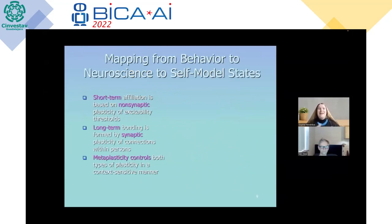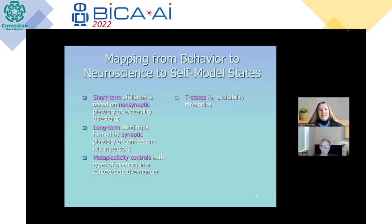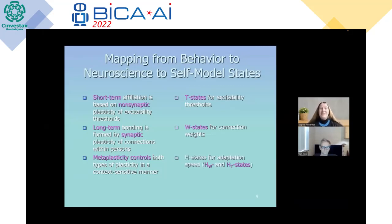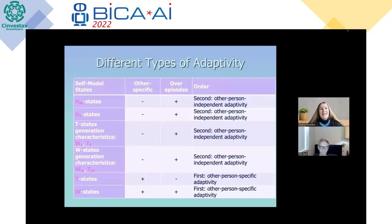The challenge remains: how can we map behavior to neuroscience to self-model states? Short-term affiliation is based on non-synaptic plasticity of excitability thresholds, so we need the T states for excitability thresholds. Long-term bonding is formed by synaptic plasticity of connections within persons, so we use the W states for connection weights. Meta-plasticity controls both types of plasticity in a context-sensitive manner, using H states for adaptation speed — HW states for W states and HT states for T states. Here you can see our different types of adaptivity built into our agent model.